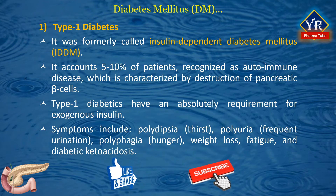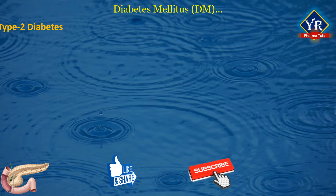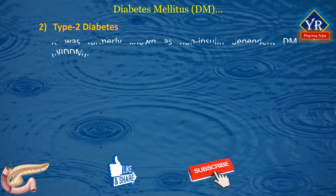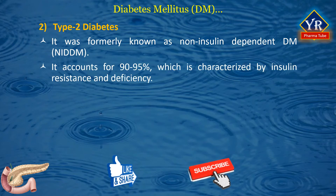The symptoms of type 1 diabetes often come suddenly, can be severe, and include polydipsia, polyuria, polyphagia, weight loss, fatigue, and diabetic ketoacidosis. Type 2 diabetes, formerly called non-insulin-dependent diabetes mellitus, accounts for 90 to 95 percent of adult cases of diabetes and is characterized by insulin resistance and deficiency.